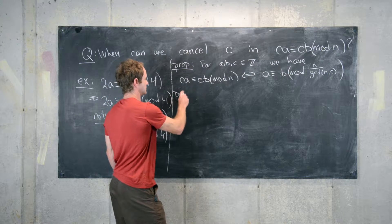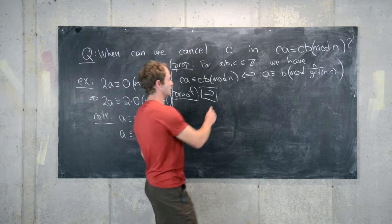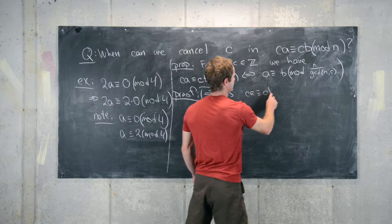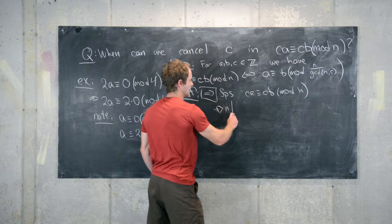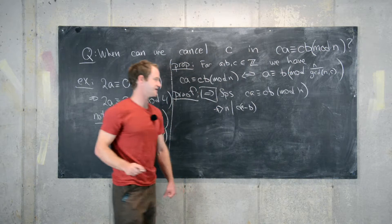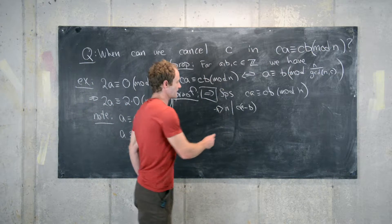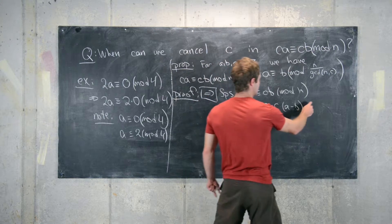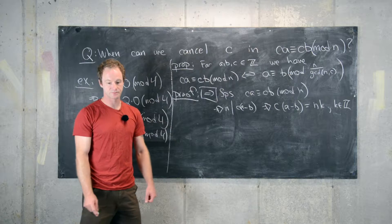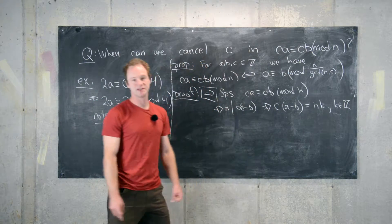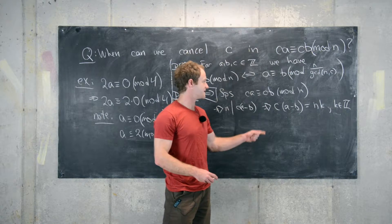Let's do the forward direction first. We suppose that CA is congruent to CB mod N. Notice that tells us that N divides C times the quantity A minus B. Now we can write this as C times (A minus B) equals N times K for some integer K, by the definition of divisibility. Now we can divide both sides of this equation by the GCD of C and N, and we'll have another integer equation, because C is obviously divisible by the GCD of C and N, and so is N.